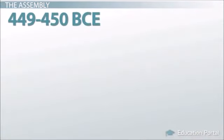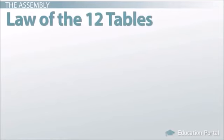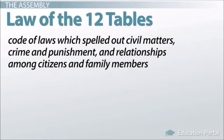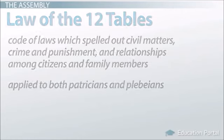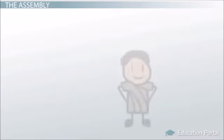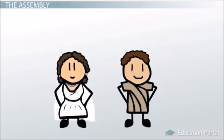Between 449 and 450 BCE, the plebeians of Rome gained another victory through the Law of the Twelve Tables. These were a code of laws which spelled out civil matters, crime and punishment, and relationships among citizens and family members. Most important about these new laws, both patricians and plebeians were bound by them. Soon, following the Law of the Twelve Tables, the assembly had gained such power that plebeians were given the right to marry patricians, and even a plebeian could be consul. Ironically, the growing power of the assembly would be blamed for the fall of the Republic.